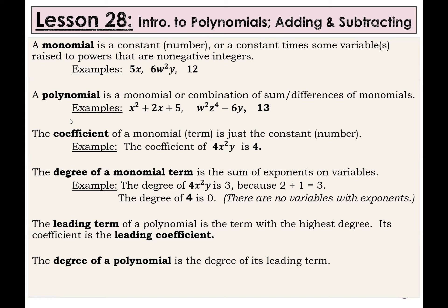When we break them down and talk about different parts of polynomials, we get to more vocabulary. The coefficient of a monomial term is just the constant or just the number. For example, the coefficient of 4x squared y is 4. Sometimes I will say 'the number in the front' — that's the coefficient. The degree of a monomial term is the sum of the exponents on the variables. You basically add up the exponents on a single term. For example, the degree of 4x squared y is 3 because we add the exponent of 2 on the x with the exponent of 1 from the y to get 3. Keep in mind there is a 1 exponent on a variable even if you don't see it. The degree of 4 is 0 — if there's no variables, there's no exponents to add. The degree of any constant term is just 0.